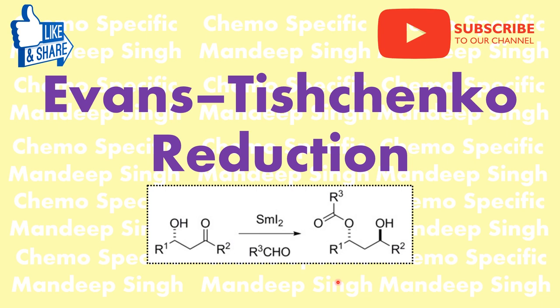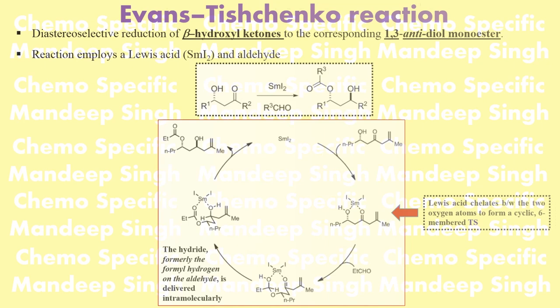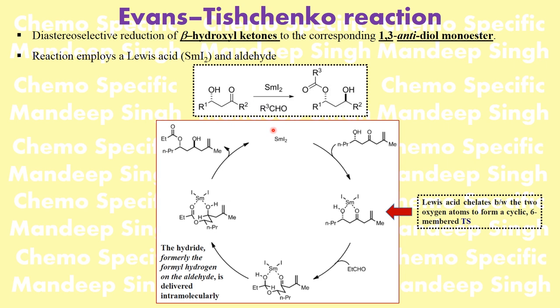In previous videos I have already discussed methods for the synthesis of 1,3-syn diol and 1,3-anti diol. Here we are going to talk about 1,3-anti diol with monoester. This is a diastereoselective reduction of a beta-hydroxy ketone to the corresponding 1,3-anti diol monoester, using samarium iodide and an aldehyde.